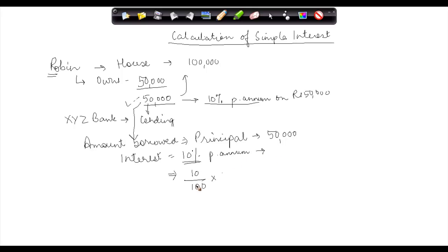What will be the quantum? 10% of 50,000. We have converted this 10 into fraction into 50,000. So the interest that he has to pay is 5,000 rupees per annum. Every year, he has to pay 5,000 rupees to the bank as interest.